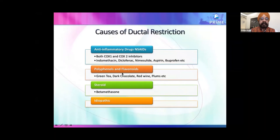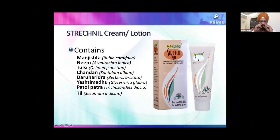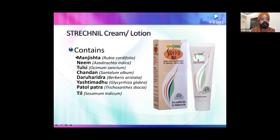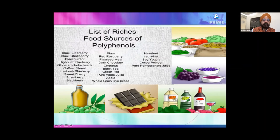We had a patient — a dental doctor — who was applying a stretch-mark cream on her abdomen for several weeks. The fetus developed ductal restriction. The active component, Rubia cordifolia, has anti-inflammatory and prostaglandin-inhibiting properties. Polyphenols from colored fruits can also interfere with prostaglandins and cause ductal restriction — including dark chocolate and grape wine — among many other things.